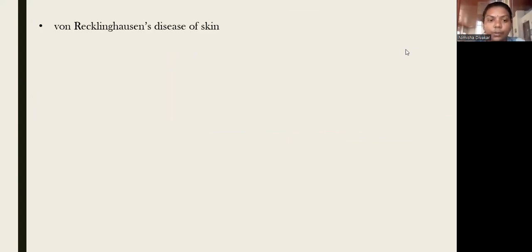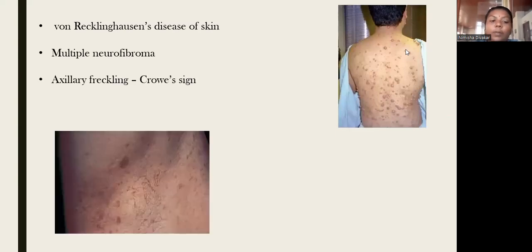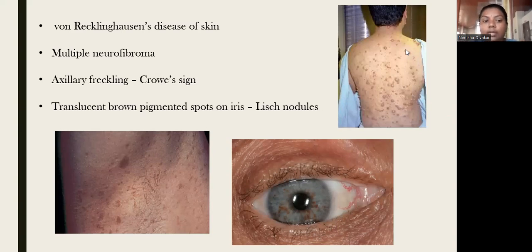Neurofibromatosis is also known as von Recklinghausen's disease of the skin. There will be multiple neurofibromas. Other diagnostic features include crowe sign, which is axillary freckling, and Lisch nodules, which are translucent brown-pigmented spots on the iris. Von Recklinghausen's disease or neurofibromatosis is diagnosed by a triad of multiple neurofibromas, axillary freckling, Lisch nodules, and café-au-lait spots that cross the midline with regular smooth borders.